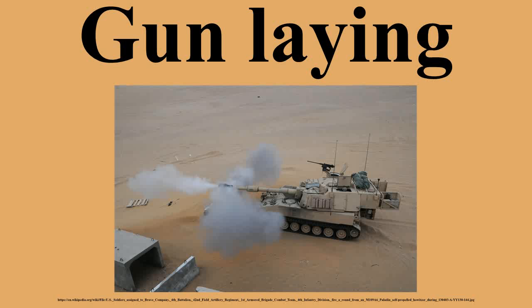With the adoption of recoil systems for field artillery, it became normal to pivot the saddle on the lower carriage. Initially this top traverse was only a few degrees, but soon offered a full circle, particularly for anti-aircraft guns. The introduction of recoil systems was an important milestone.